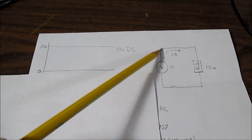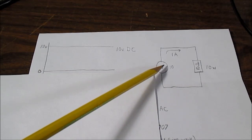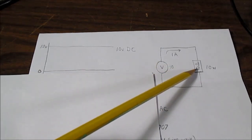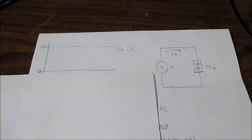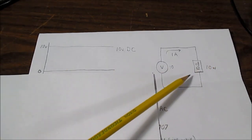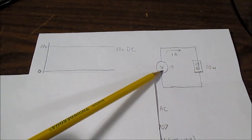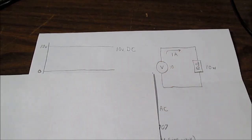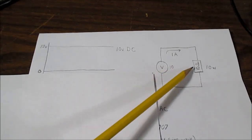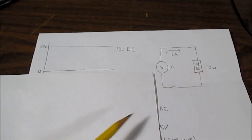what will be the wattage dissipated in the resistor? Well if you put 10 volts across the resistor and use the formula, voltage squared divided by resistance, you can see that 10 squared is 100 divided by 10 will give us 10 watts.